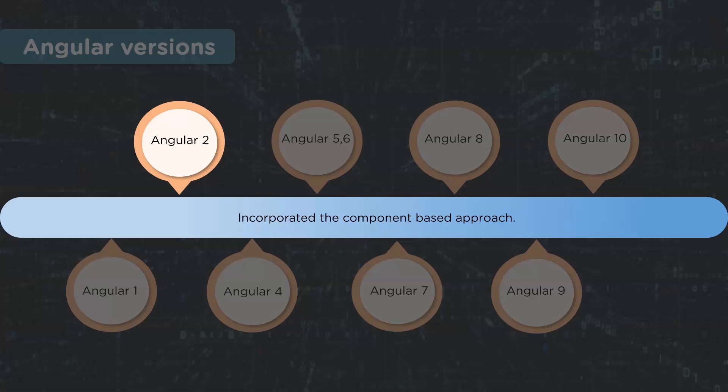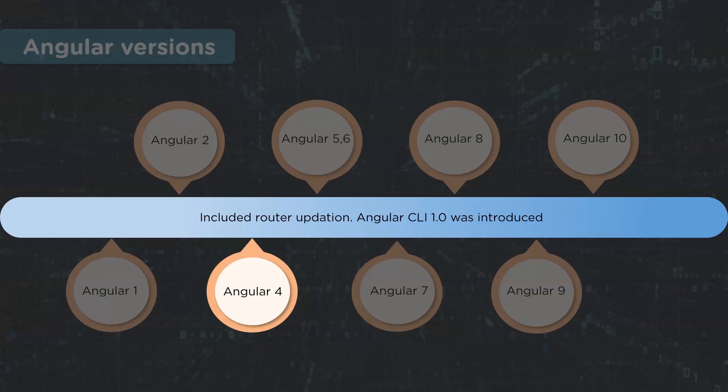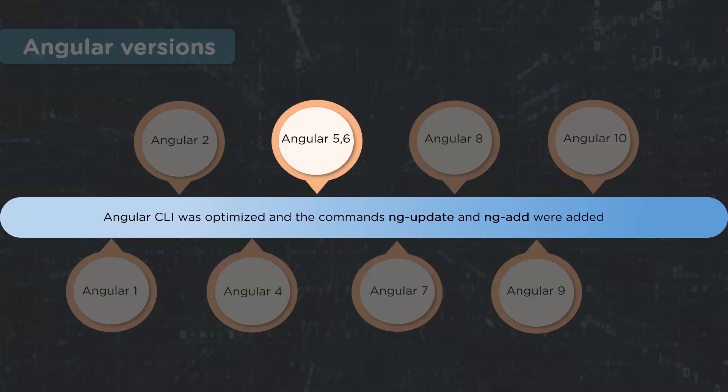Angular 1.x was not built with mobile support in mind, whereas Angular 2 came with mobile support. Angular 3 was skipped due to certain discrepancies. With Angular 4, the release was made backward compatible with 2.x.x for most applications, and there was no major change from Angular 2.